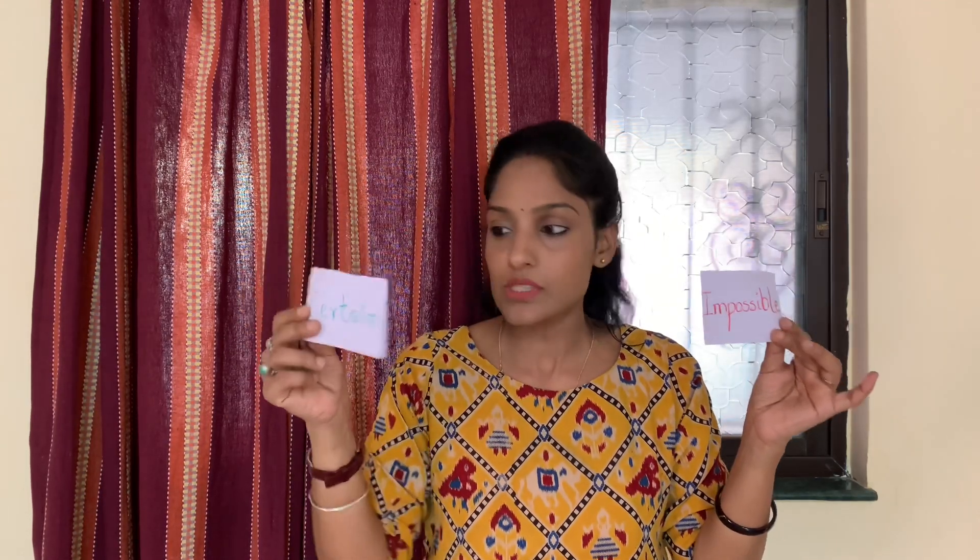One is certain and one is impossible. What is certain? Certain means that something is definitely going to happen. And impossible means it will definitely not happen. Probability lies somewhere between these two extremes — between certain and impossible.